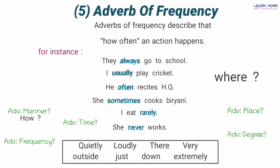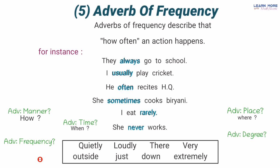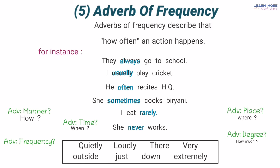Aur agar koi adverb yeh dikha raha hai ke koi kaam kahan hota hai — where — kisi place ke baare mein bataye, toh woh hamara adverb of place hoga. Aur agar koi adverb humein kisi kaam ke waqt ke baare mein bataye ke koi kaam kab hota hai, kab ho raha hai, toh woh hamara adverb of time hoga. Very simple. Aur agar koi adverb kisi adjective ya kisi adverb ki degree ko badhaaye, toh woh hamara adverb of degree hoga. Aur agar koi adverb humein kisi kaam ki frequency ke baare mein bataye ke koi kaam kitni baar hota hai, kab kab hota hai, toh woh hamare adverb of frequency honge.